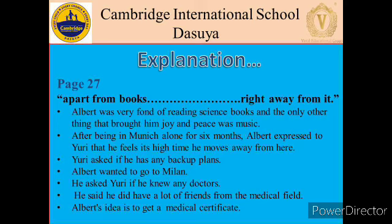After being in Munich alone for six months, Albert expressed to Yuri that he feels it's high time he moves away. He sees no point in carrying on like this, because it is only going to result in wastage of his father's money, everyone's time and efforts. Yuri asked if he had any backup plans, to which Albert says that going to Milan would not be such a great idea because his father would send him back. They were discussing all about it when suddenly an idea occurred to him — he asked Yuri if he knew any doctor, to which Yuri replied that he had a lot of friends from the medical field.